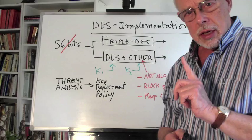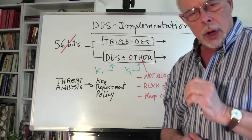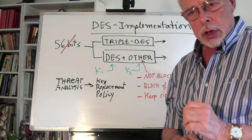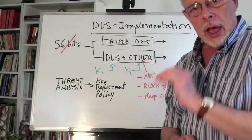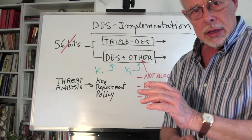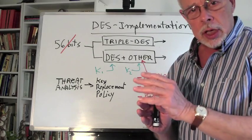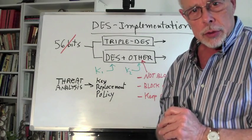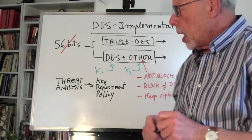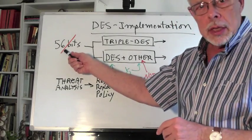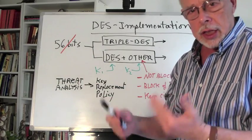DES ciphertext commits to its plaintext. So whoever gets a hold of the ciphertext eventually has the plaintext. Our purpose is to make this 'eventually' far enough into the future, but we cannot prevent it. It's crackable, and 56 bits means it's crackable very quickly.